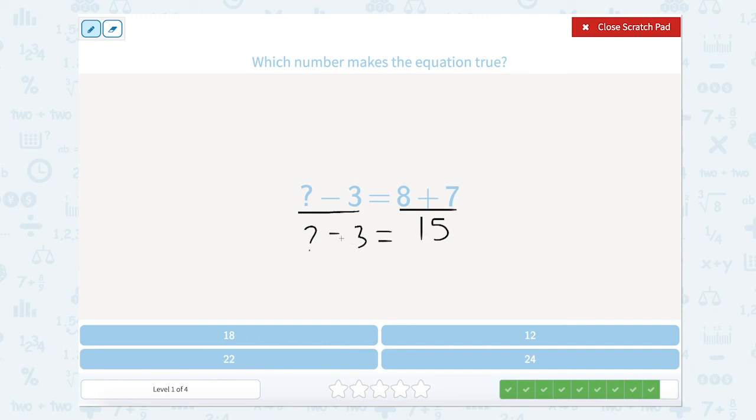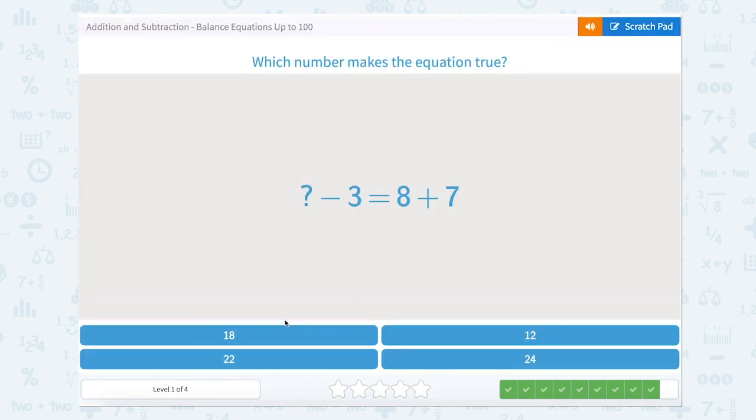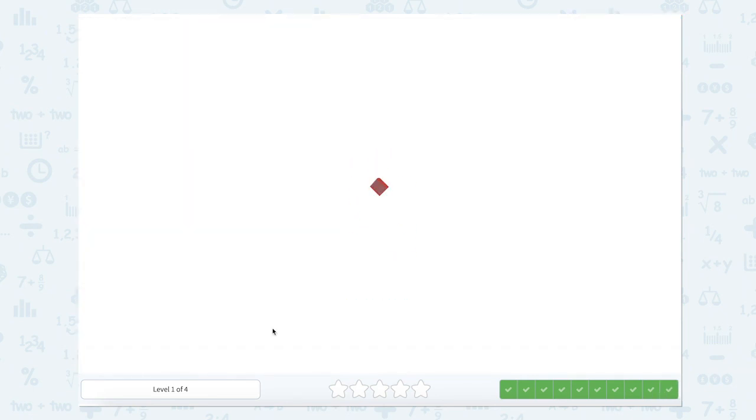So something minus 3 equals 15. 15 plus 3 is 18. So 18 minus 3 equals 15. So let's see if 18 is up here. It is. Let's close that scratch pad. Nice work.